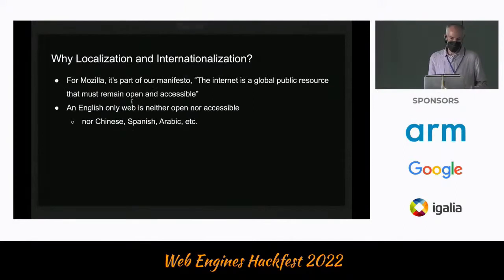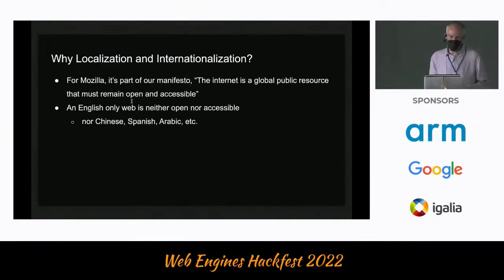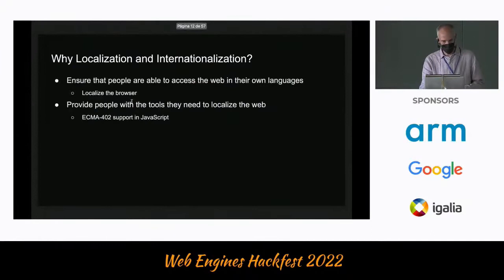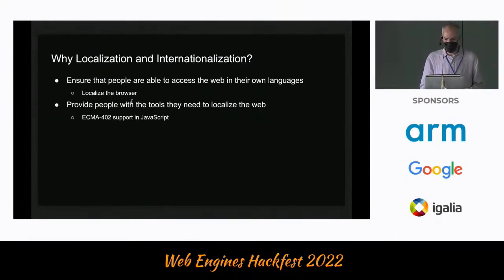So why do we care about localization and internationalization? For Mozilla it's part of our manifesto saying the internet is a global public resource that must remain open and accessible to everyone — and an English-only web is neither open nor accessible, nor is a Chinese-only or Spanish-only web. We want to ensure that people can access the web in their own languages, which basically means localizing the browser. And we want to provide people with the tools they need to localize the web — that's ECMA-402 support in JavaScript.